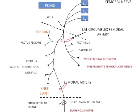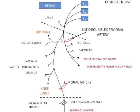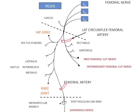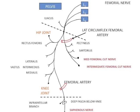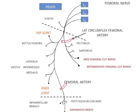The anterior branch of the femoral nerve is a superficial branch which gives rise to the medial femoral cutaneous nerve, intermediate femoral cutaneous nerve, and two muscular branches to pectineus and sartorius.